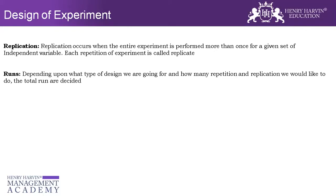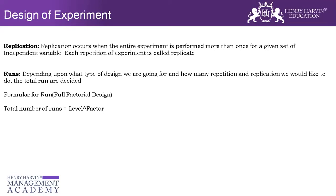Then we talk about runs, which are very important. Runs are basically the number of trials. There is a formula: run = level to the power of factor. Which means if the factor is 3 and the level is 2, how many runs should there be? Two to the power three is eight — that is the number of runs.